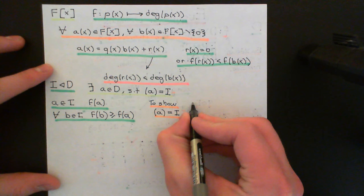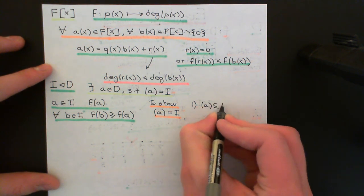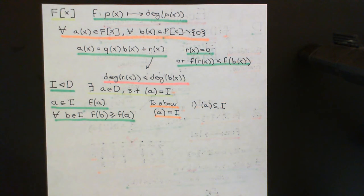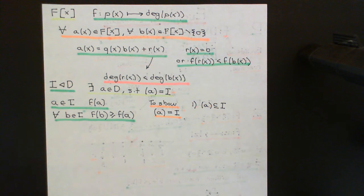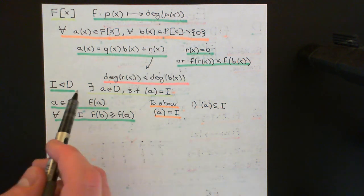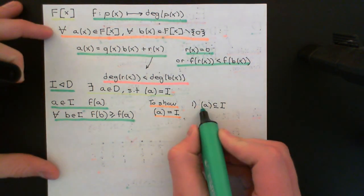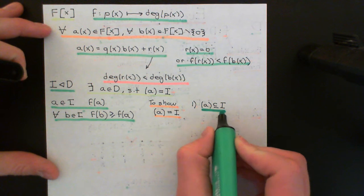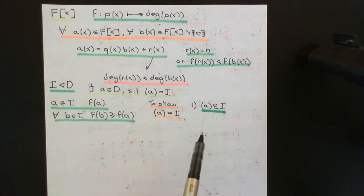Number one to prove: the entire principal ideal generated by A is contained within the ideal capital I. That's absolutely simple. If A is an element of the ideal, then all multiples of A by elements of the Euclidean domain capital D have to be within the ideal, and all of those elements are in the principal ideal generated by A. So indeed, all elements of the principal ideal generated by A must be in the ideal capital I.